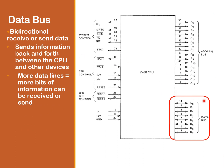Next is the data bus. Unlike the address bus, the data bus is bidirectional, meaning it can receive or send data. Information can be sent back and forth between the CPU and the other devices. If you have more data lines, that means more bits of information can be received or sent.